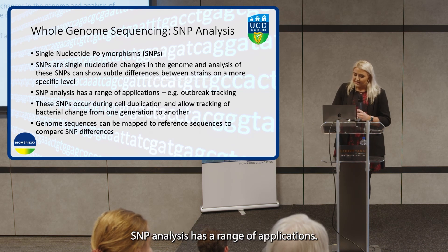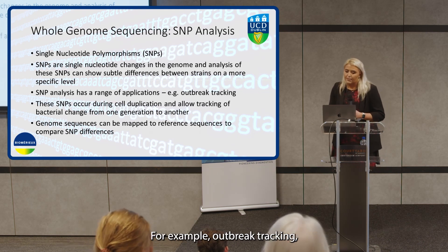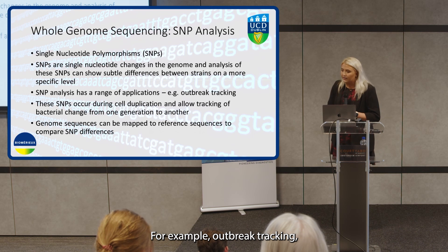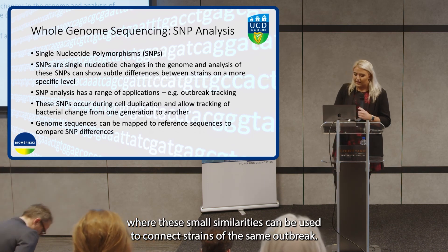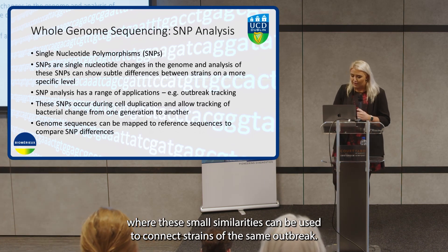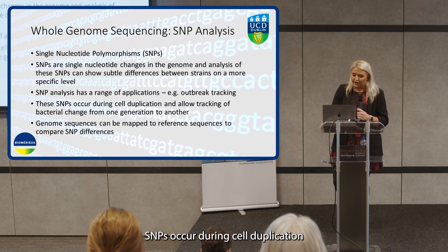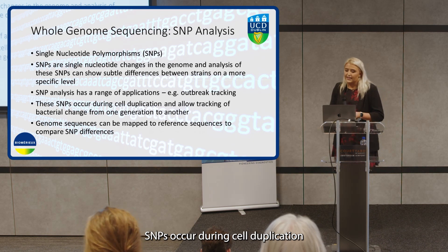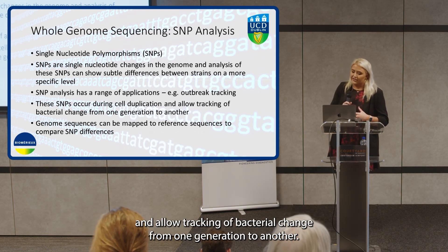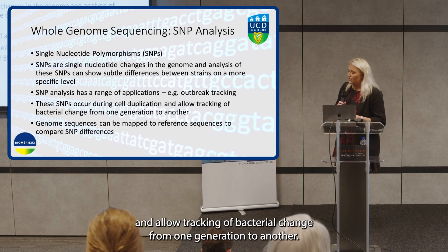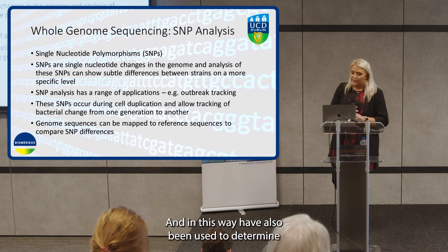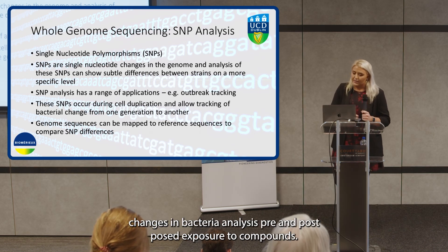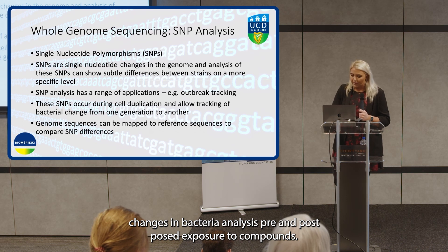SNP analysis has a range of applications, for example outbreak tracking, where these small similarities can be used to connect strains of the same outbreak. SNPs occur during cell duplication and allow tracking of bacterial change from one generation to another, and have also been used to determine changes in bacterial isolates pre and post exposure to compounds.